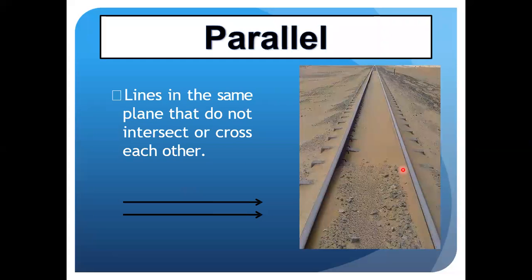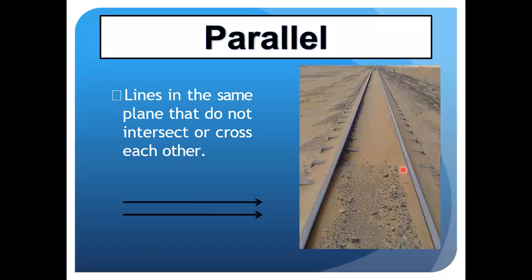The next type is parallel lines. Parallel lines are lines in the same plane that don't intersect or cross each other. You can see two lines here on screen.